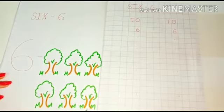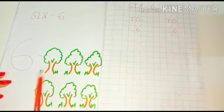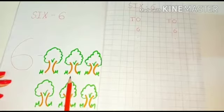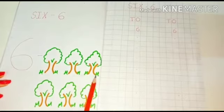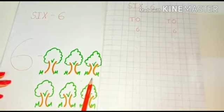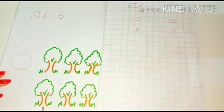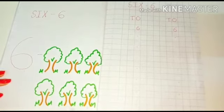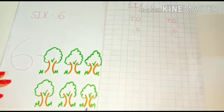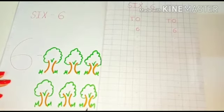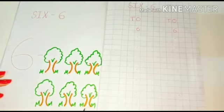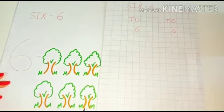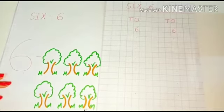Let's count once again: 1, 2, 3, 4, 5, 6. There are 6 trees.